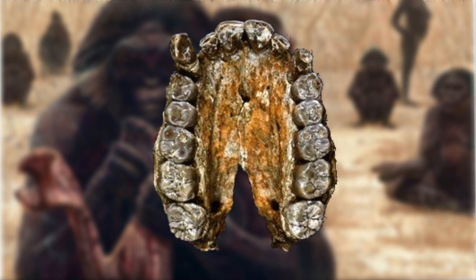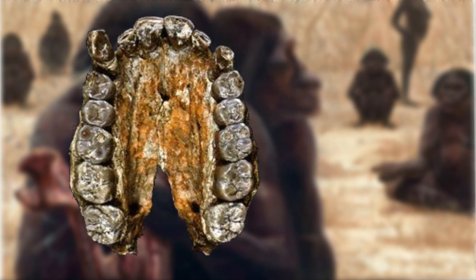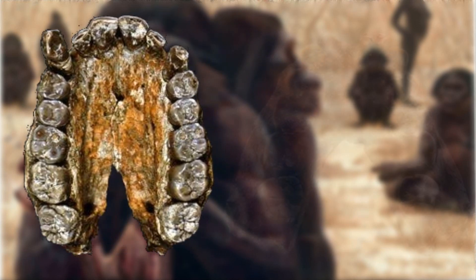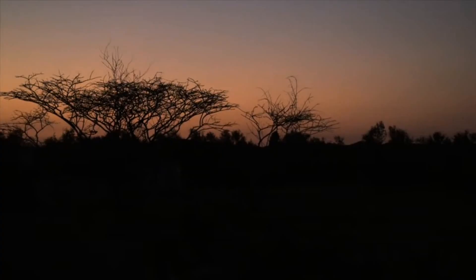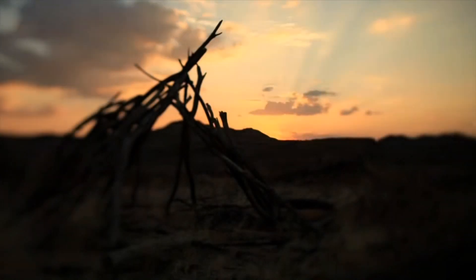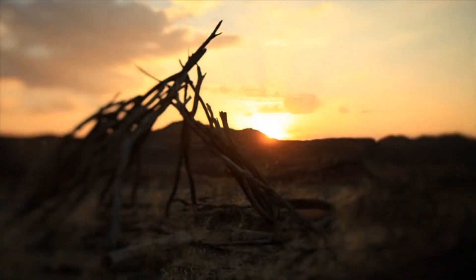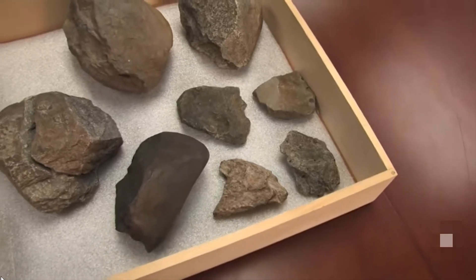However, there are some scientists who claim that the large molar teeth show that Australopithecus garhi is related to Paranthropus aethiopicus.